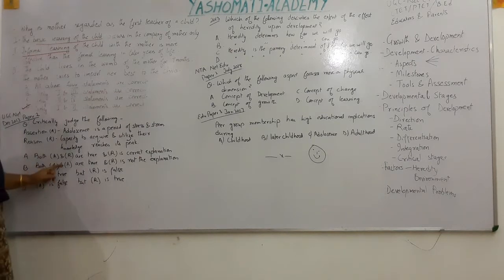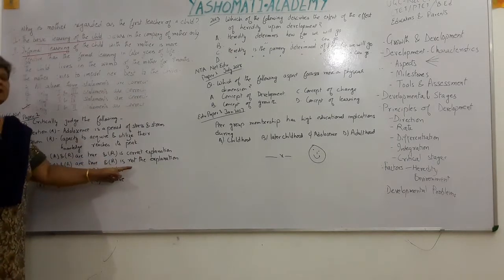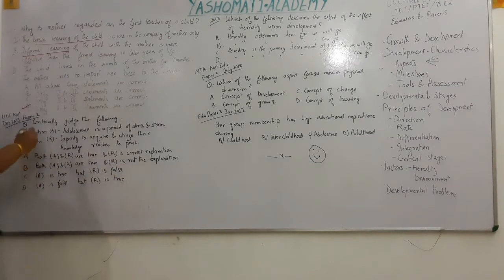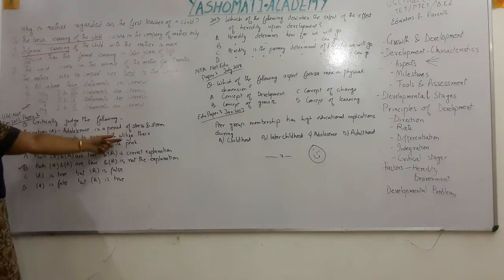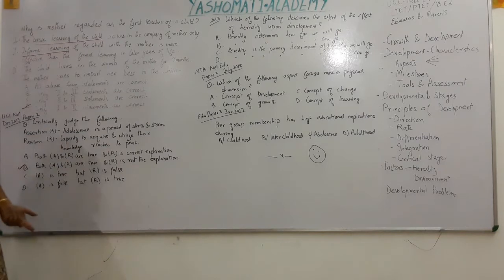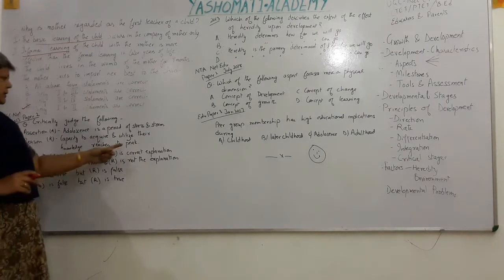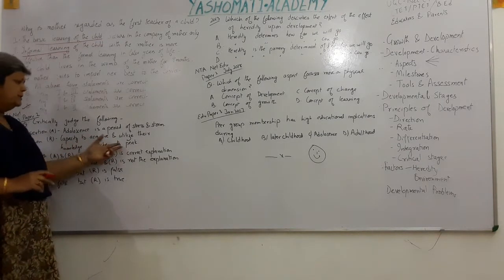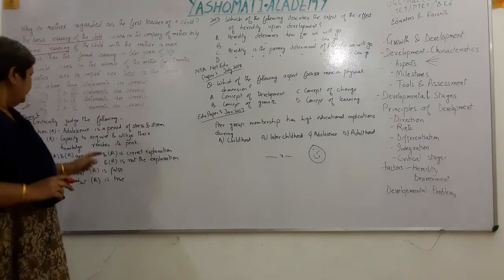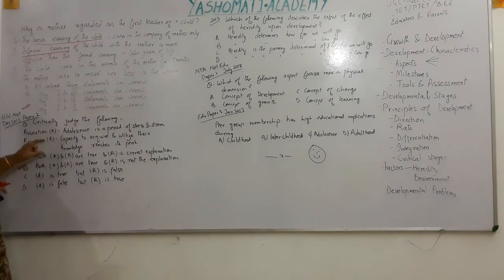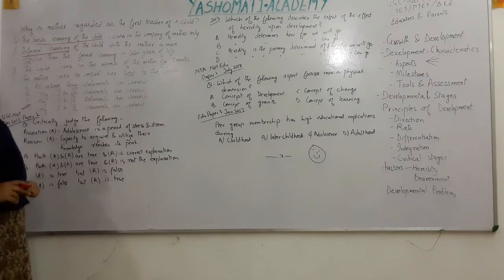The correct answer is: Both A and R are true but R is not the correct explanation. Both are correct statements, but the reason for adolescence being stressful is not because knowledge capacity peaks — R is not the reason for A.